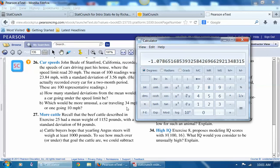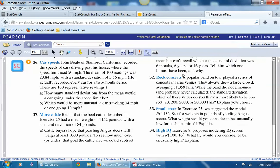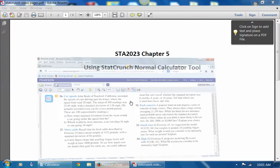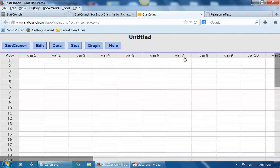What would be more unusual, a car traveling 34 or a car going 10 miles per hour? Now we could use just z-scores, but I thought I would show you in StatCrunch how you can use a tool in there called a normal calculator.